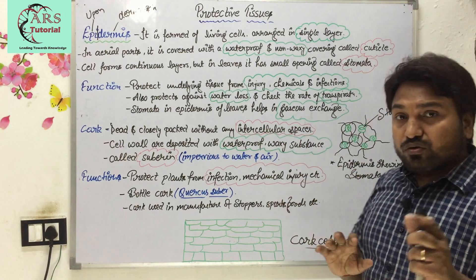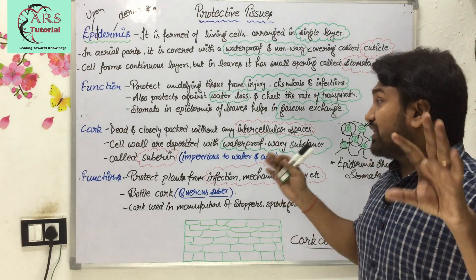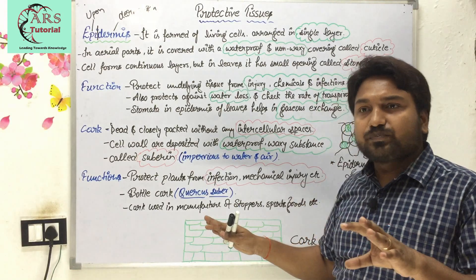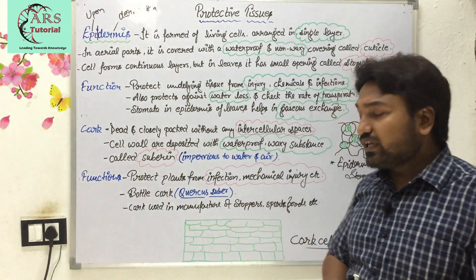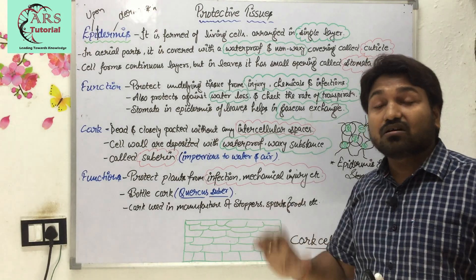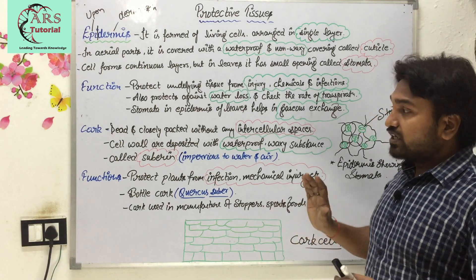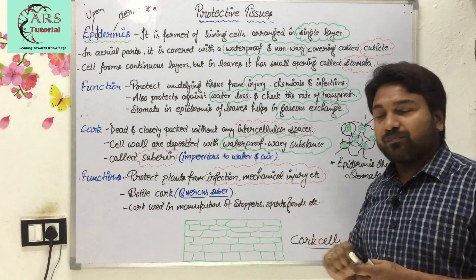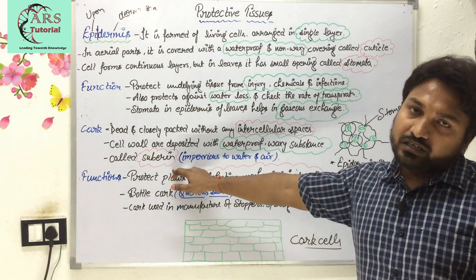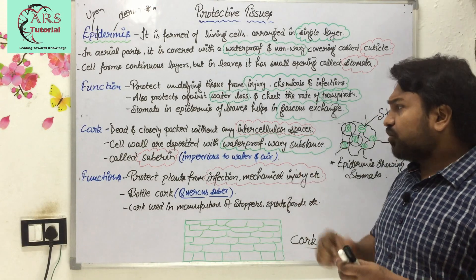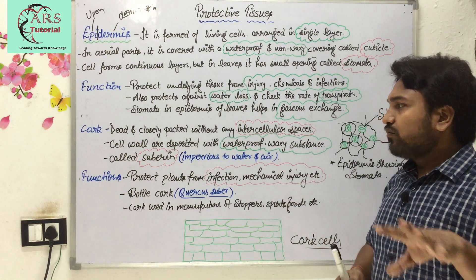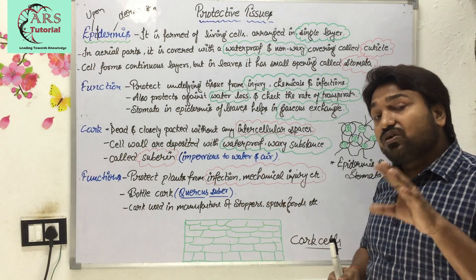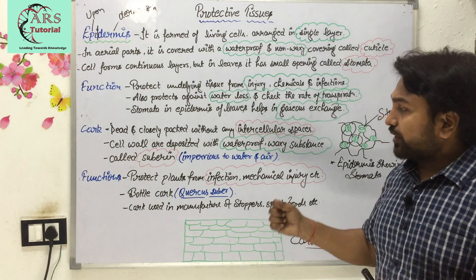Now the next one is cork. Cork cells are dead and closely packed with no intercellular spaces. You can see in the diagram that in cork cells there is no intercellular space. The cell walls are deposited with a waterproof, waxy substance known as suberin. Suberin is a waterproof substance that covers the cell wall, making cork impervious to water and air — meaning it does not allow water and air to enter.